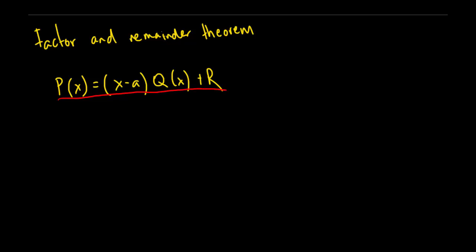So I'll just go step by step on what these terms represent. This term here is the factor, and I'll explain that in a minute. This is the quotient, and obviously this one will be the remainder.